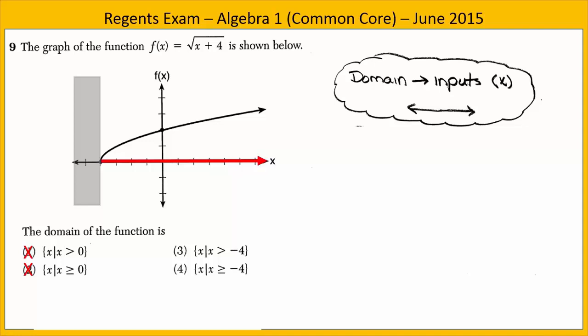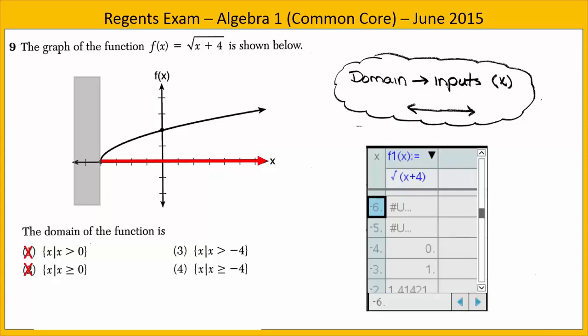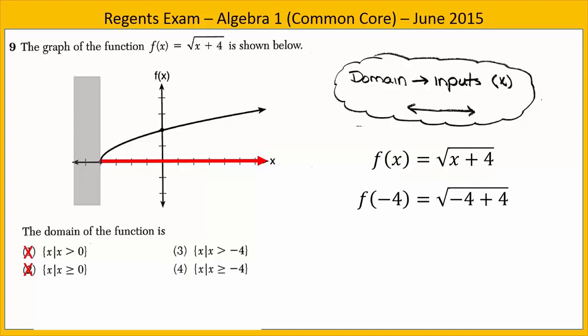If you weren't sure, you could always put the equation in your graphing calculator and look at the table. Notice that negative 4 is included in the domain and the output is 0. You could also do this algebraically — substituting negative 4 in, you find f equals 0. The input negative 4 gives an output of 0, so negative 4 is included. Choice 4 is our answer: x is greater than or equal to negative 4.